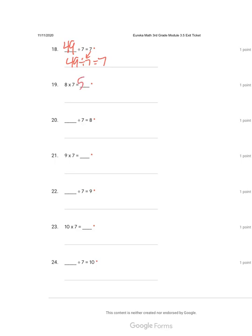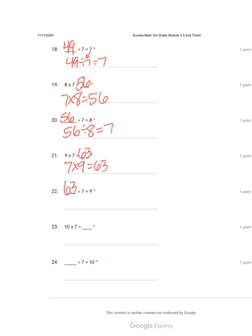Number nineteen: eight times seven is fifty-six. Seven times eight is fifty-six. Fifty-six divided by seven equals eight. Fifty-six divided by eight equals seven. Nine times seven is sixty-three. Seven times nine equals sixty-three. Sixty-three divided by seven equals nine. Sixty-three divided by nine equals seven.